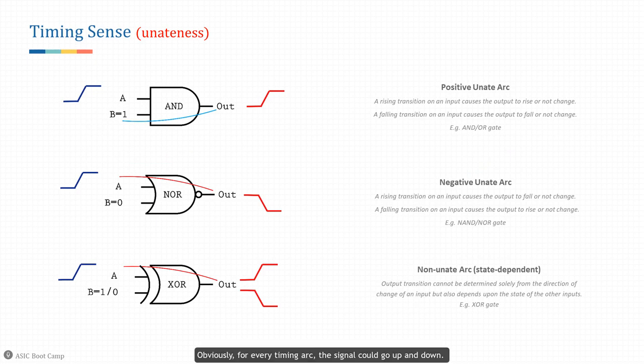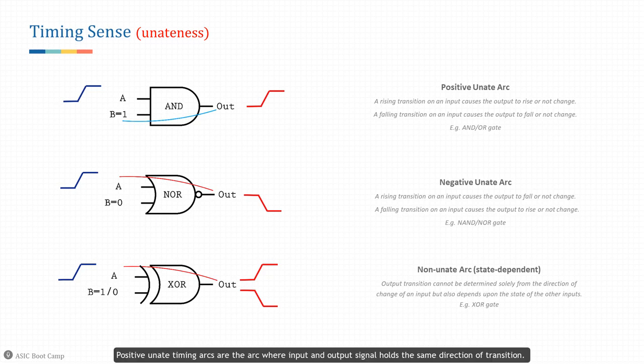For every timing arc the signal could go up and down, so the transition could be rise and fall. We define the timing sense as three types of unateness. Positive unate timing arcs are arcs where the input and output signal hold the same direction of transition — a rising transition on an input causes the output to rise or to be unchanged; a falling transition causes it to fall or be unchanged.